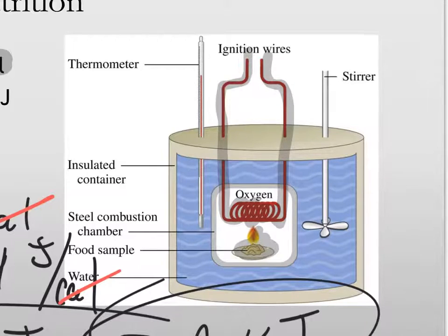That food, while it's burning, is going to radiate energy out. It's going to go out. And that energy is going to be absorbed by the water surrounding it. This whole thing is called a bomb calorimeter.